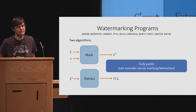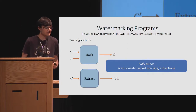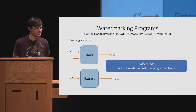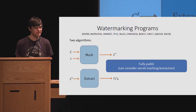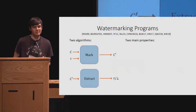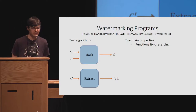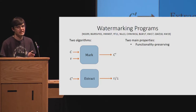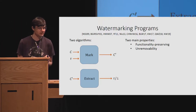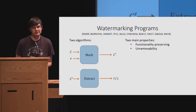As I've defined these algorithms, they're in the fully public setting, meaning that the mark and extract algorithms don't take any secrets. But you can also consider secret marking and extraction settings where these algorithms require secrets held by some trusted watermarking authority. There are two main properties we want: functionality preserving — the marked circuit should preserve the functionality of the unmarked circuit — and unremovability, which says that given a marked circuit, it should be difficult for an adversary to create another circuit that preserves functionality yet removes the mark.